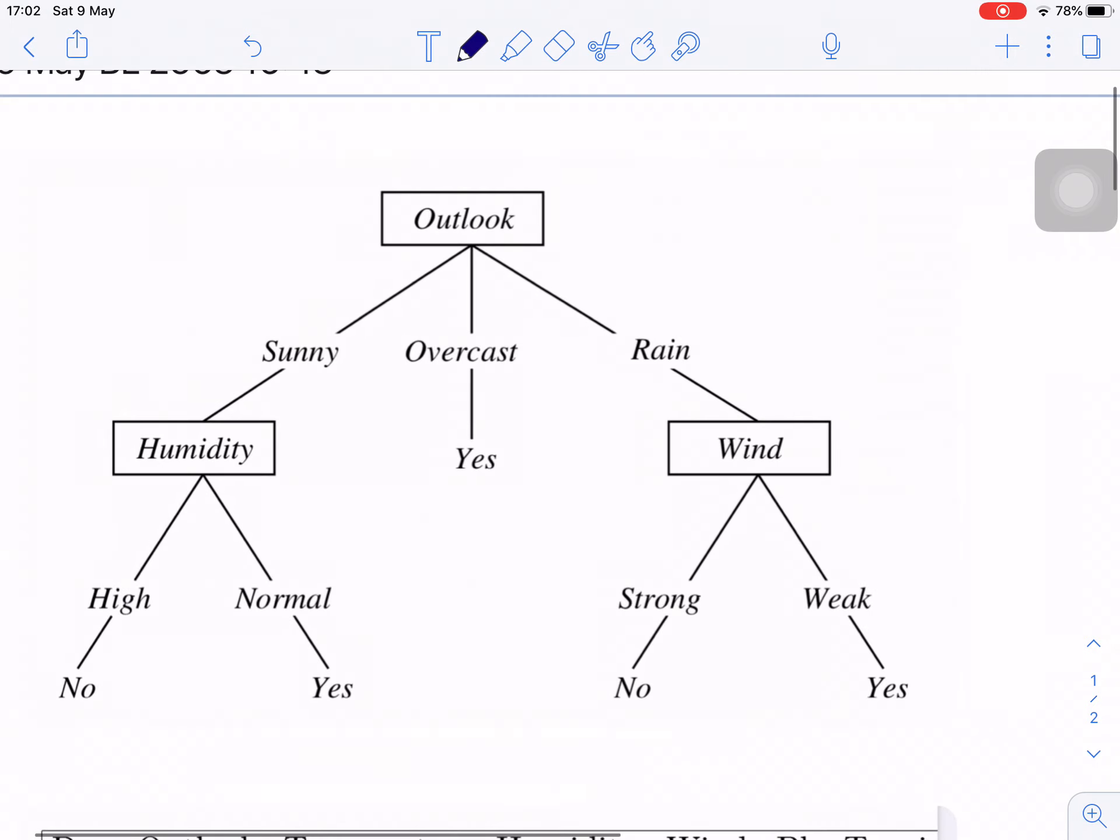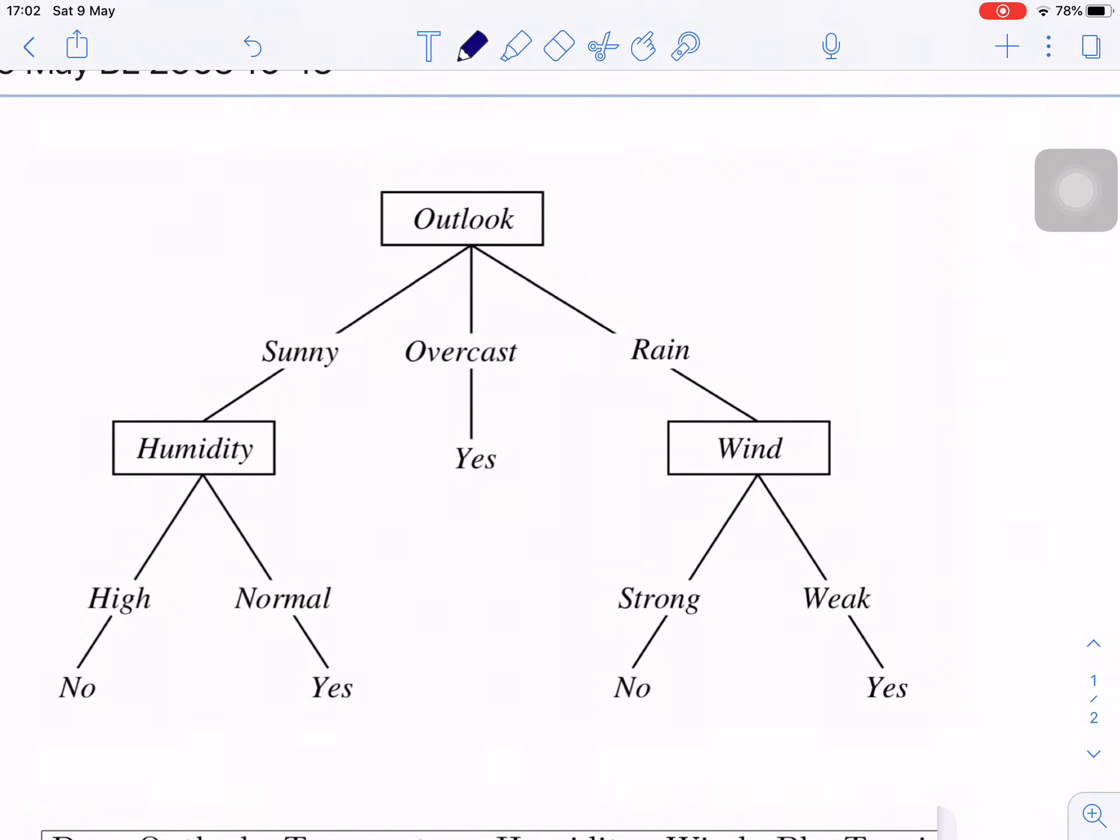This is one of the trees that can explain when he will play or not play. So I think you can see that from the result. The representation of the decision tree, humans like us can understand it easily, right?